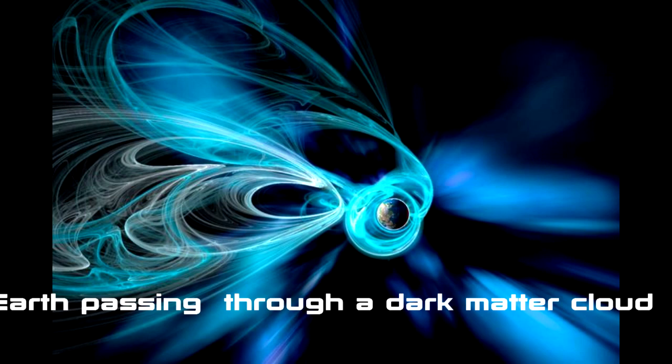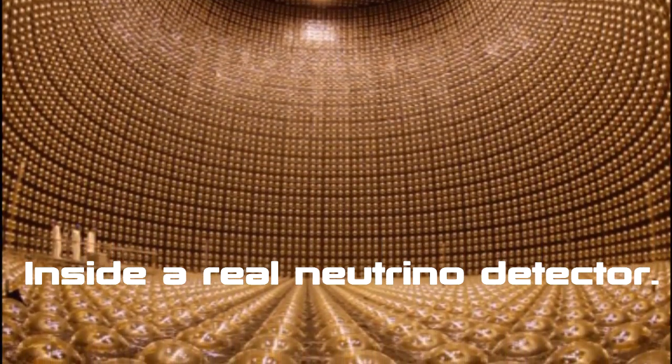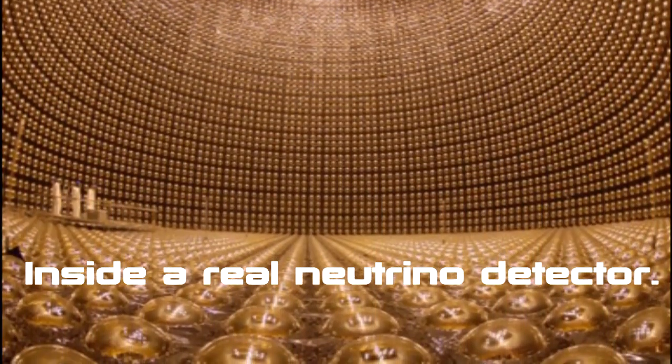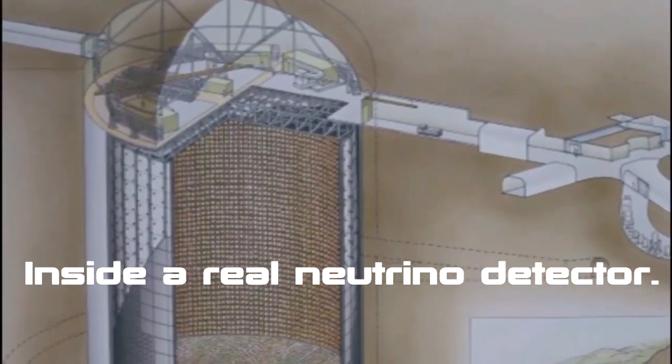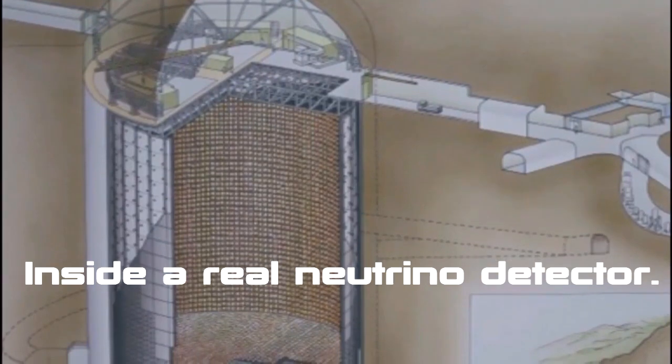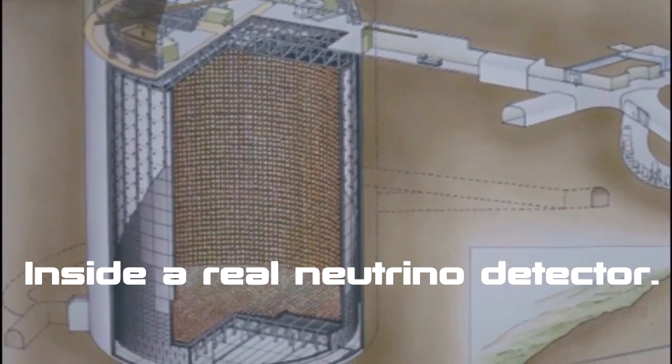Neutrinos, which is Italian for the little neutral one, interact with ordinary matter so rarely that for most people, they see their 10th birthday before the first time a neutrino interacts with one of their atoms. The one thing we know about dark matter currently is that it's nonluminous and has mass.